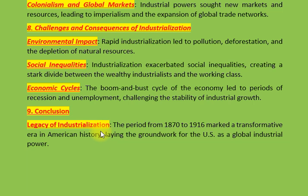گلیڈڈ ایج — اٹھارہ ستر کی دہائی سے انیس سو تک — کی خصوصیات میں تیز اقتصادی ترقی، شہر کاری، اور صنعتی توسیع شامل ہیں۔ یہ دور سماجی عدم مساوات، سیاسی بدعنوانی اور محنت کی خراب حالات کی عکاسی کرتا ہے۔ اس دور میں امیر و غریب کے درمیان فرق بھی بڑھا اور سماجی ناہمواری اس صنعتی ترقی کی علامت بن گئی۔